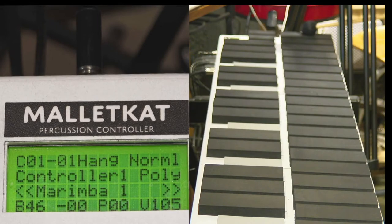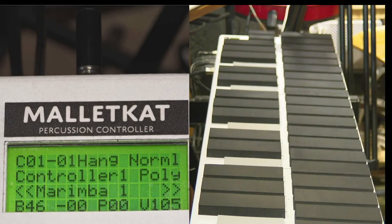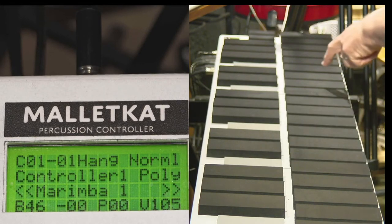The program change here, the high C, is the program name number that you want to call up. And the chain is simply calling up that user kit.